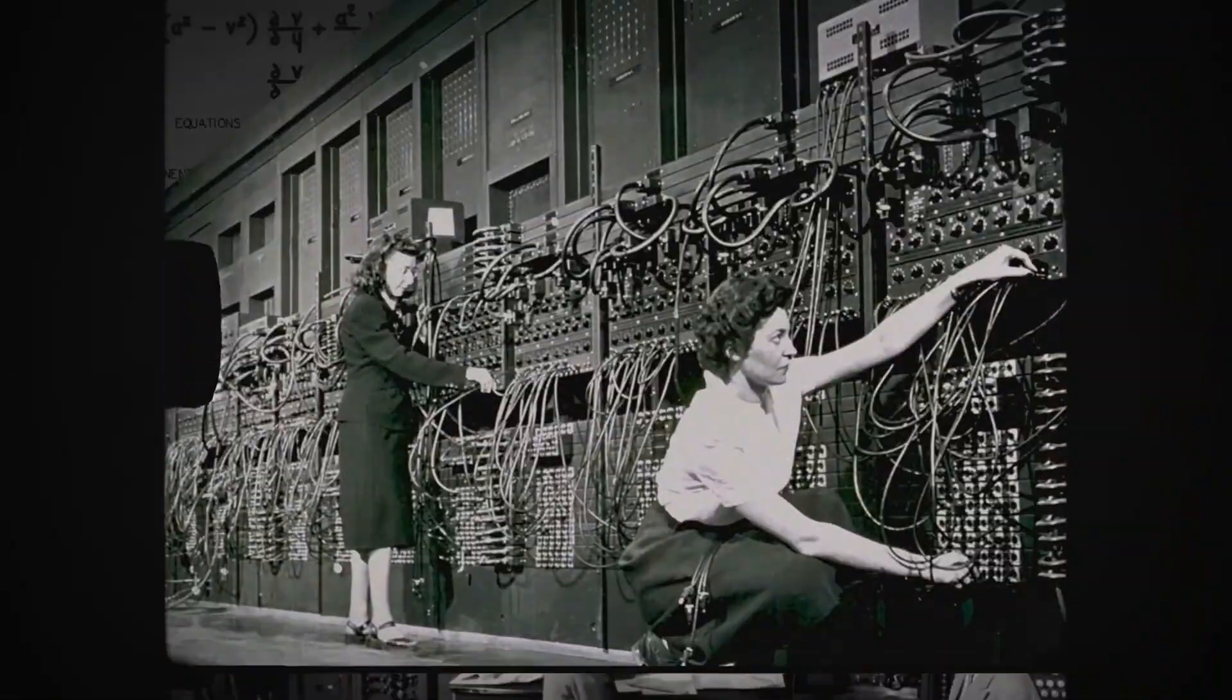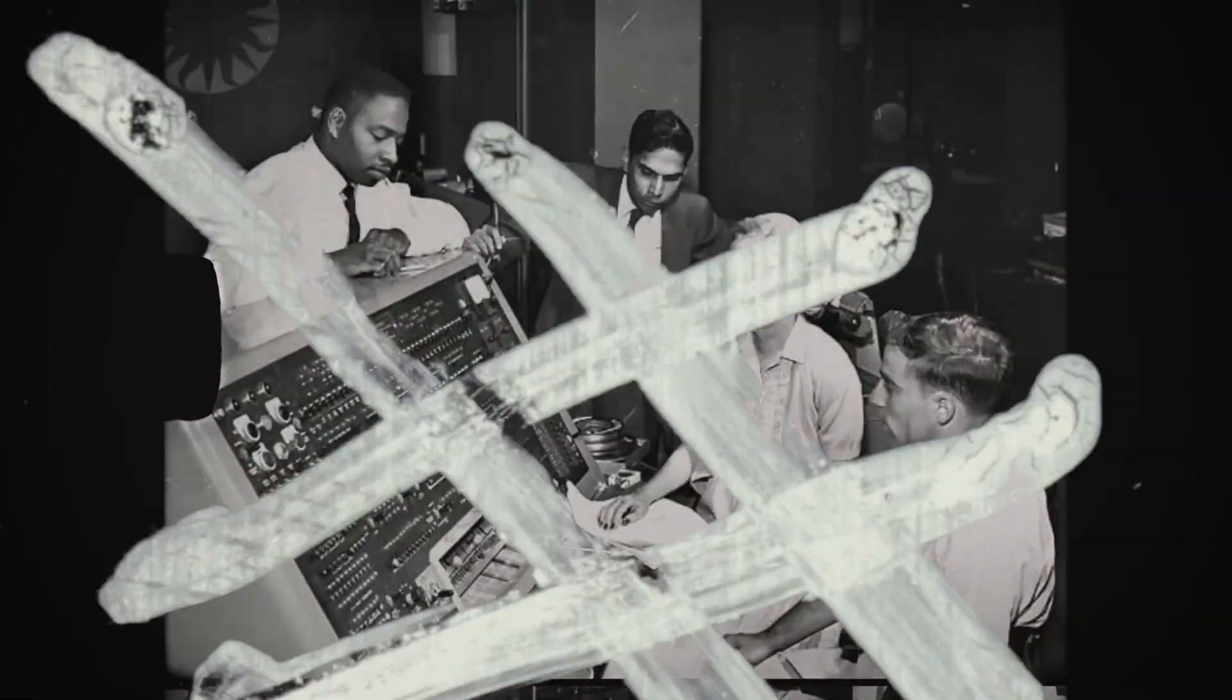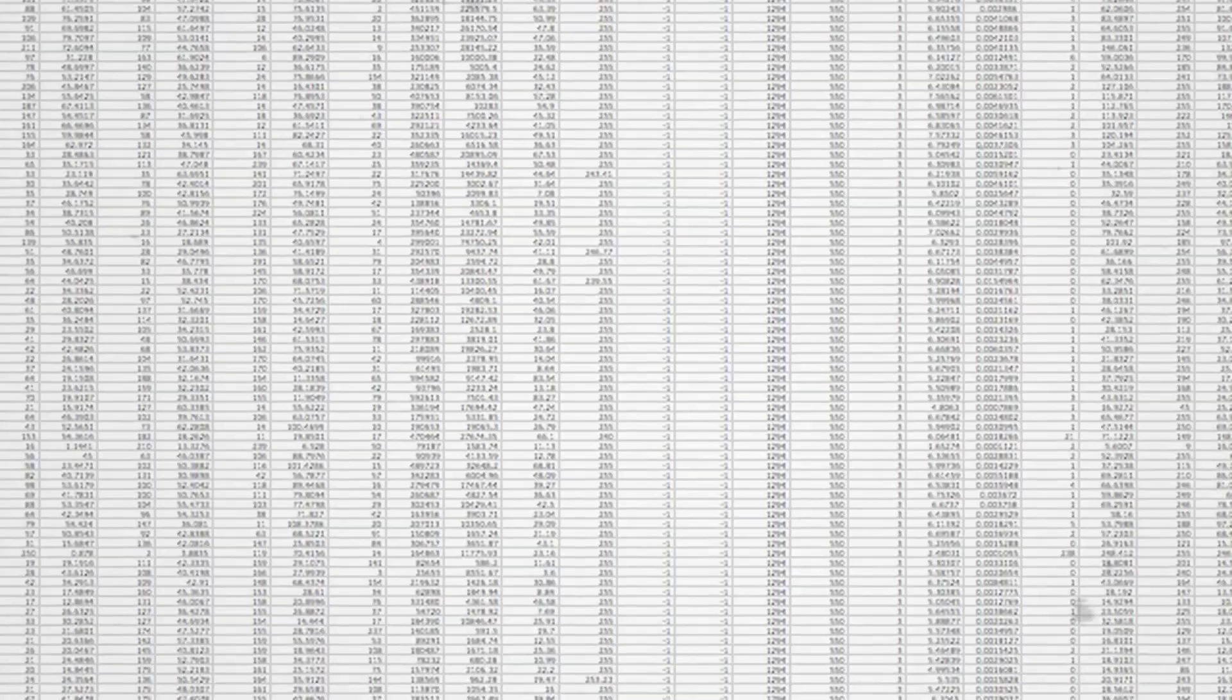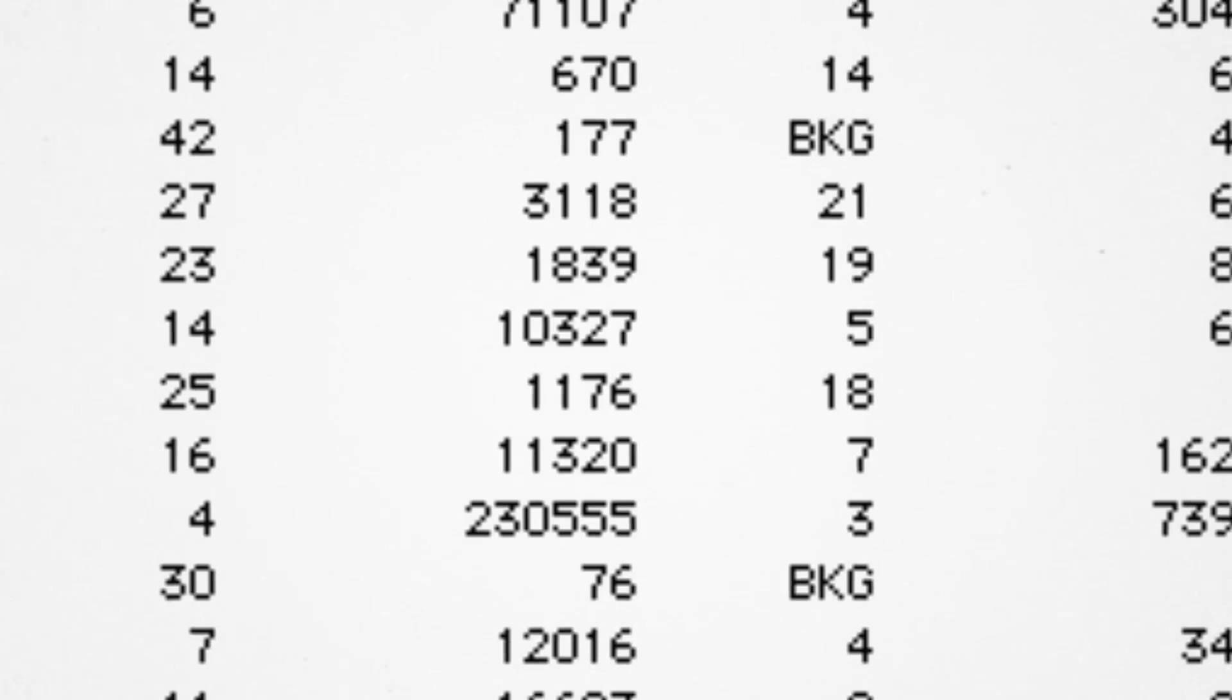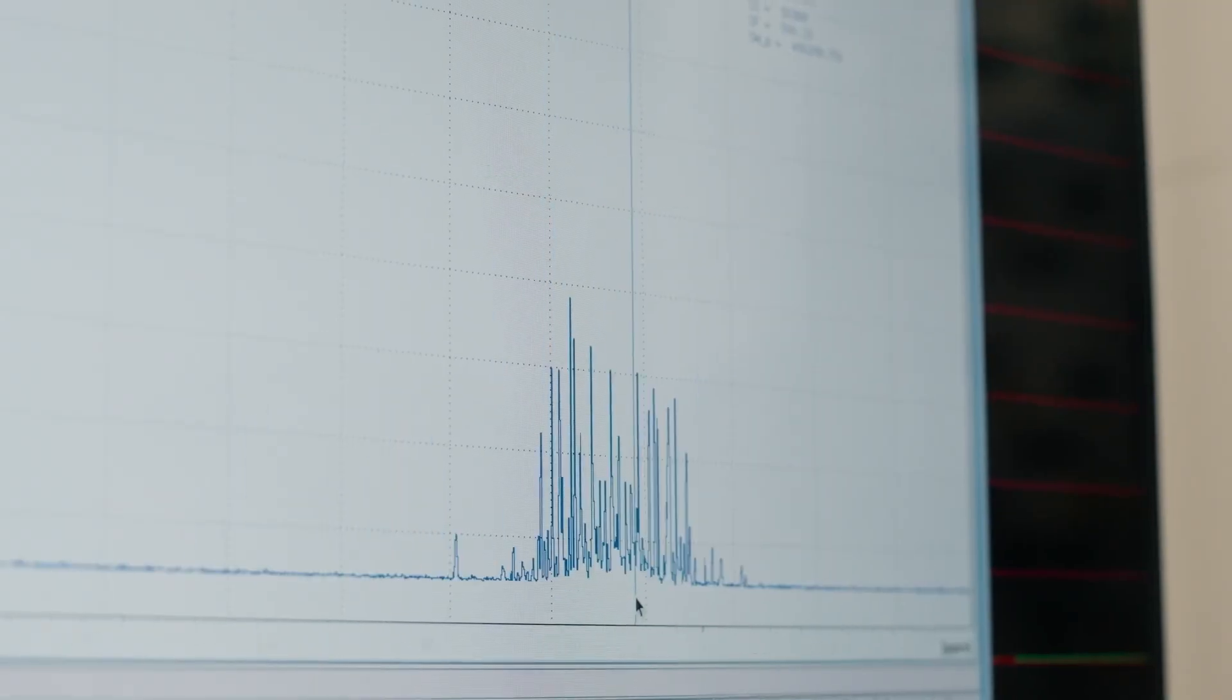This model has worked incredibly well for decades, but it comes with limits. As problems grow more complex, the number of steps required grows explosively. Eventually, even the most powerful classical computers begin to slow down, not because they're poorly designed, but because the problems themselves become too large to handle sequentially.